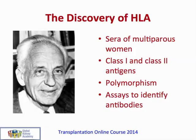Tissue typing advanced largely due to the discovery of HLA molecules — protein structures derived from the MHC, major histocompatibility complex, on the short arm of chromosome 6. Antibodies to HLA molecules were first discovered by Jean Doucet in Paris, who noticed that women who had had many children had antibodies to human cells. This led to the discovery of both class 1 and class 2 HLA proteins, noted to be highly polymorphic — there is a great deal of difference between different alleles, and HLA proteins are among the most polymorphic in the entire human genome.